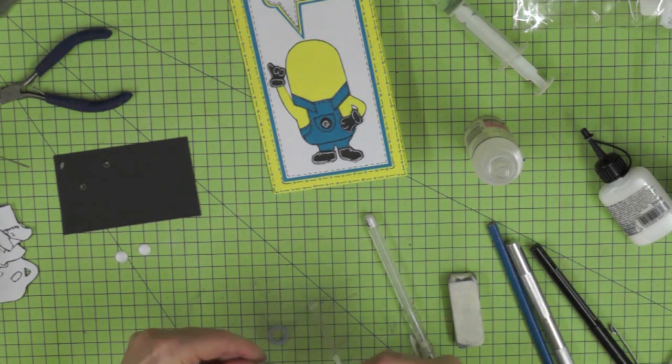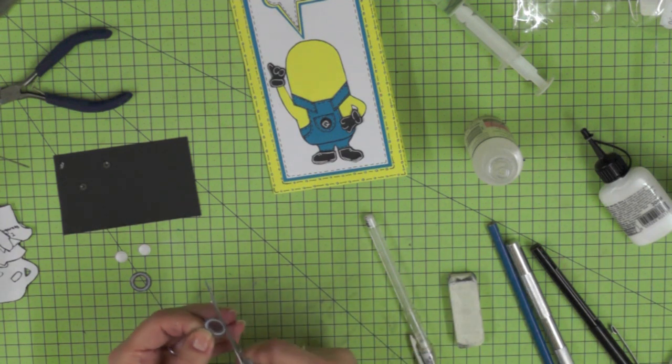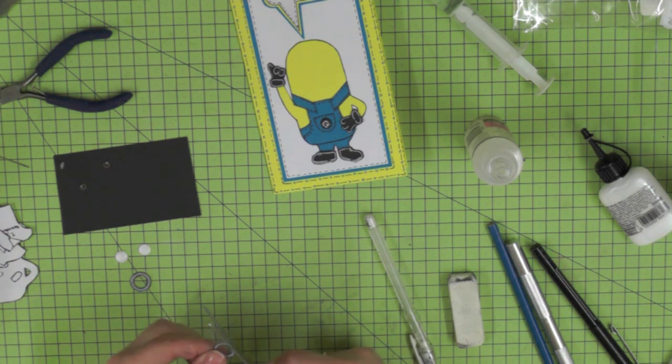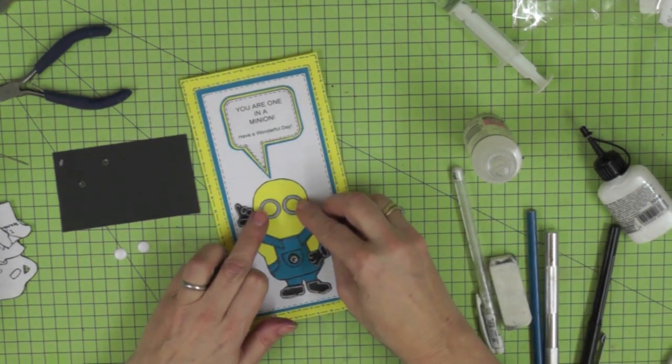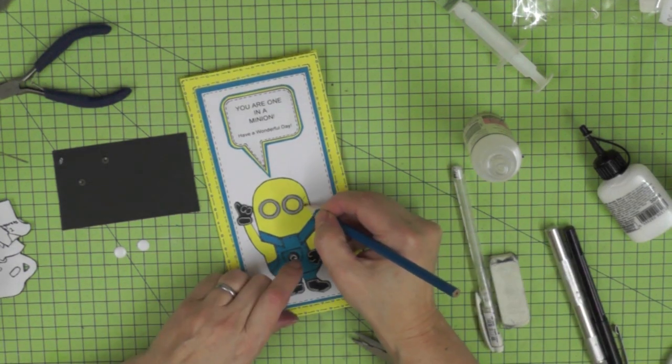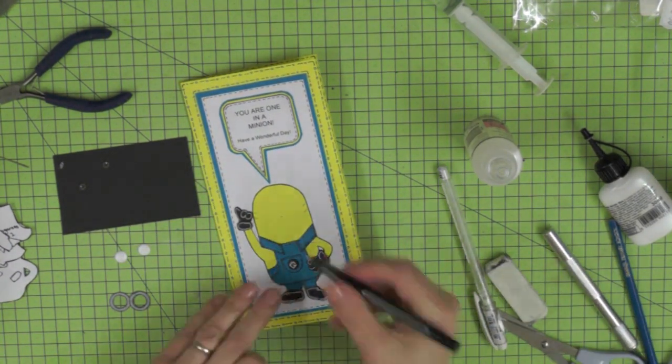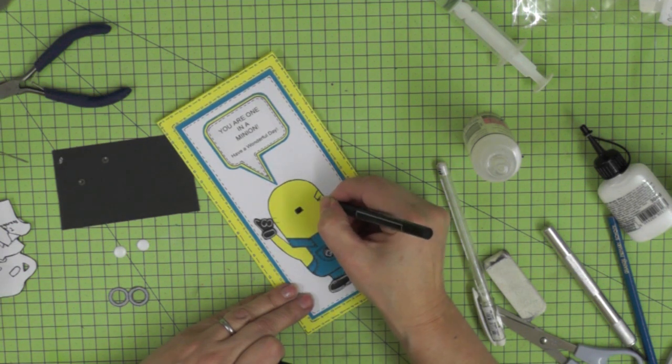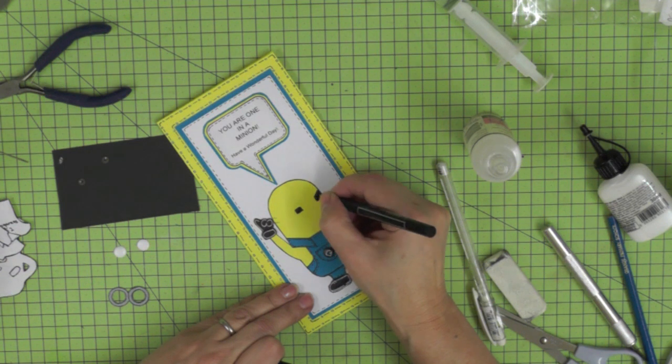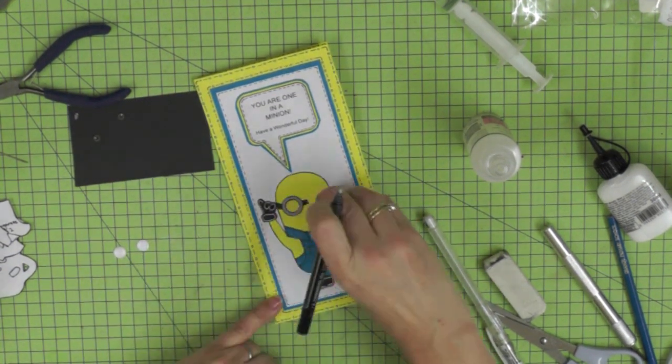And now that my Glossy Accents is dry I'm just trimming right round the outside of the little glasses. And now we're ready to attach them to the card. So just have a little dry run to start with so you can see where you're going with his eyes, and you're going to draw in the arms and the bridge of his glasses. So remove the glasses and just add that detail in with a black pen. And if you just go a little bit beyond where you marked, it means they'll just sit underneath the rims of the glasses once you have them in position.